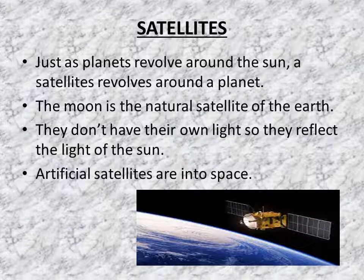Now let us learn about satellites. Just as planets revolve around the Sun, a satellite revolves around a planet. The Moon is the natural satellite of the Earth. They don't have their own light, so they reflect the light of the Sun. Artificial satellites are sent into space. You can see here in the picture how an artificial satellite is there around our Earth.